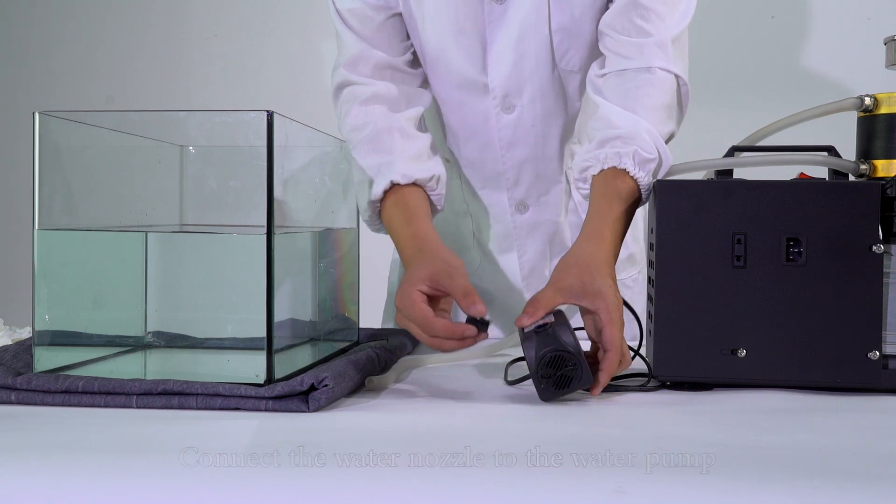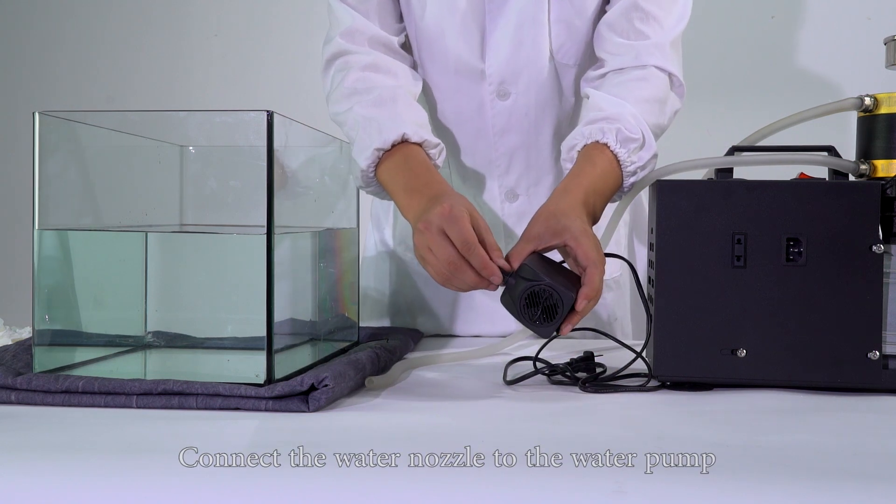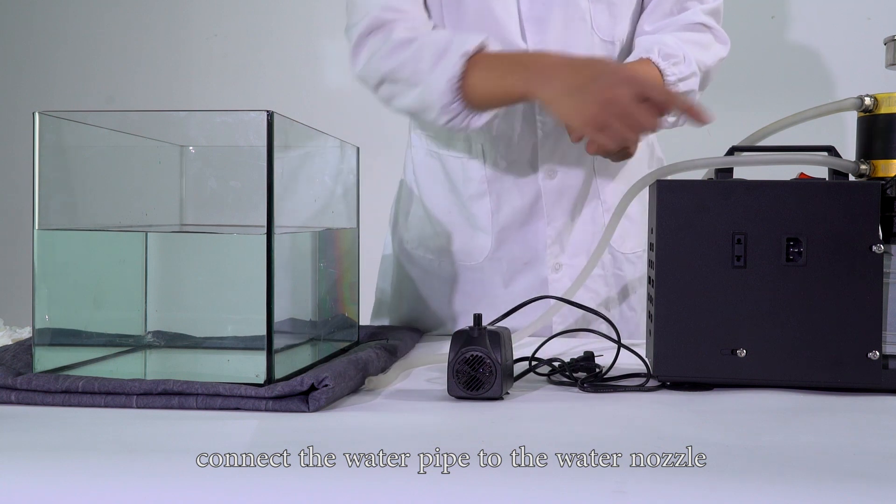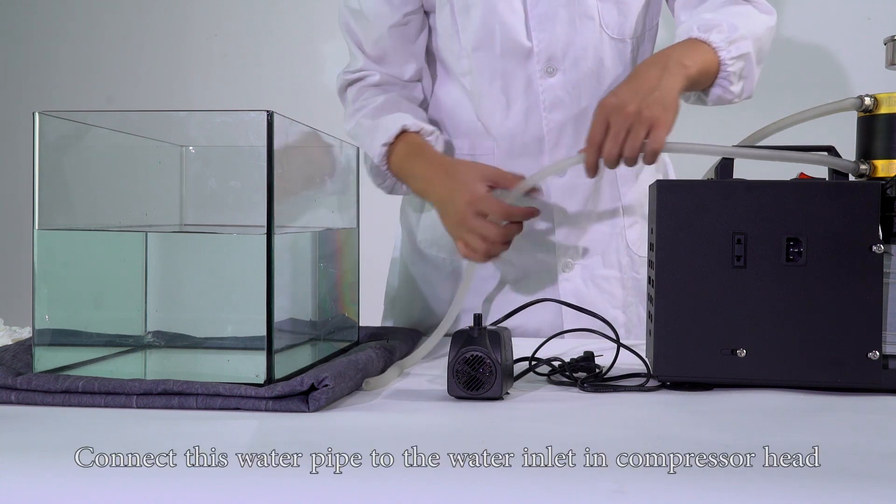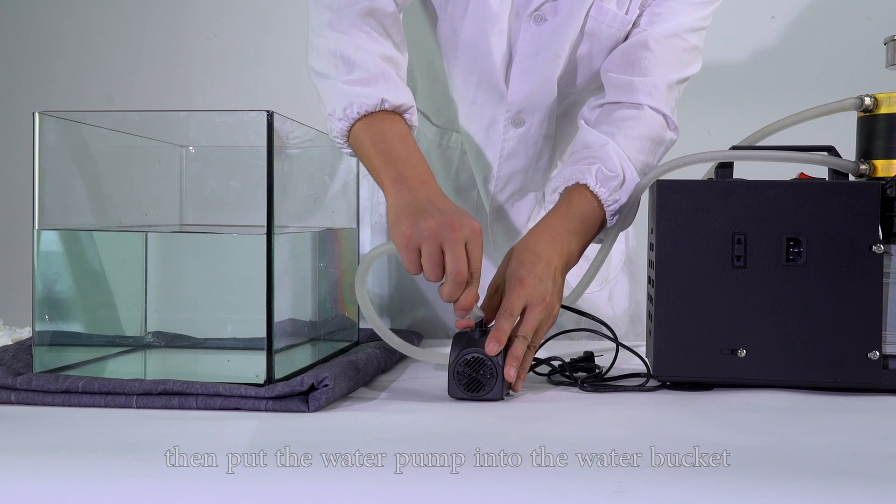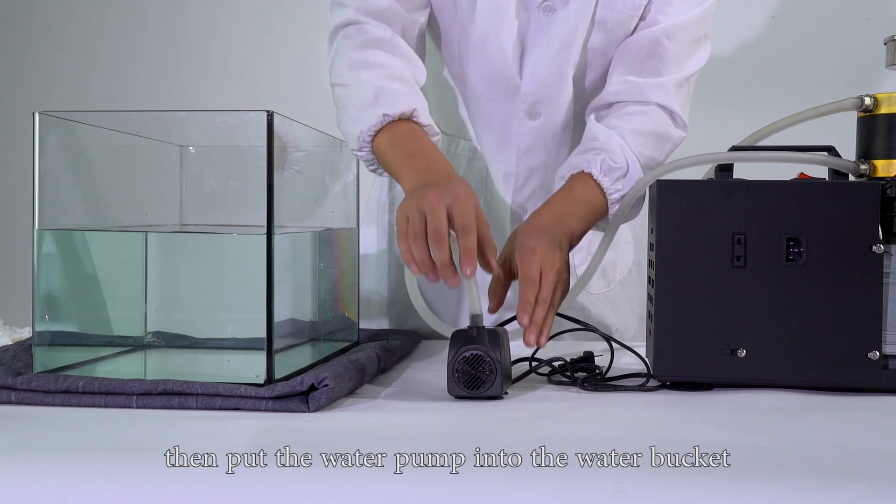Install the water pump. Connect the water nozzle to the water pump. Connect the water pipe to the water nozzle. Connect this water pipe to the water inlet in compressor head. Then put the water pump into the water bucket.